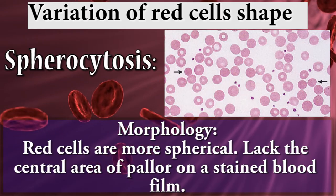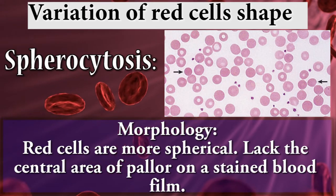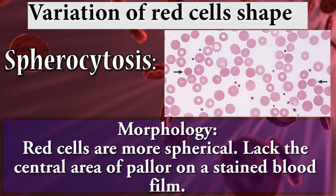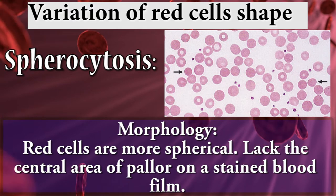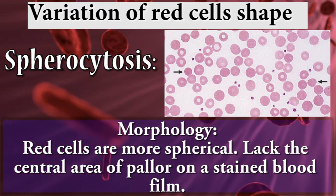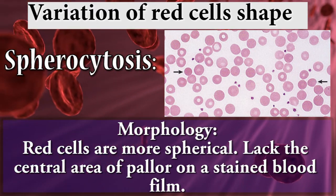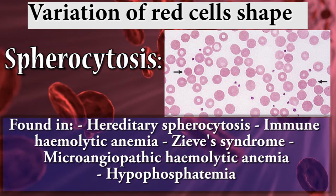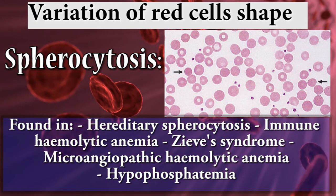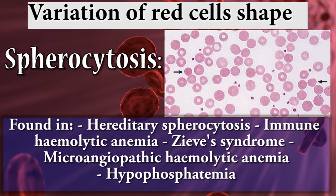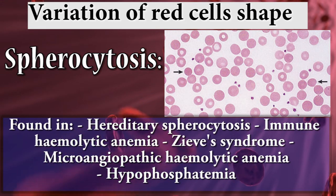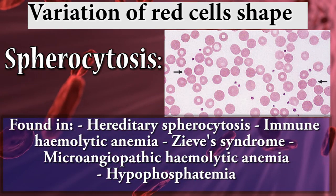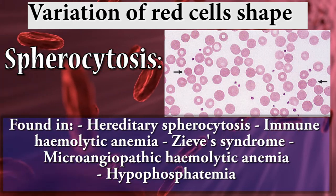When we talk about variation in red cell shape, the first term is spherocytosis. The morphology shows red cells that are more spherical, lacking the central area of pallor seen on a stained blood film. Found in hereditary spherocytosis, immune hemolytic anemia, Evans syndrome, microangiopathic hemolytic anemia, and hypophosphatemia.